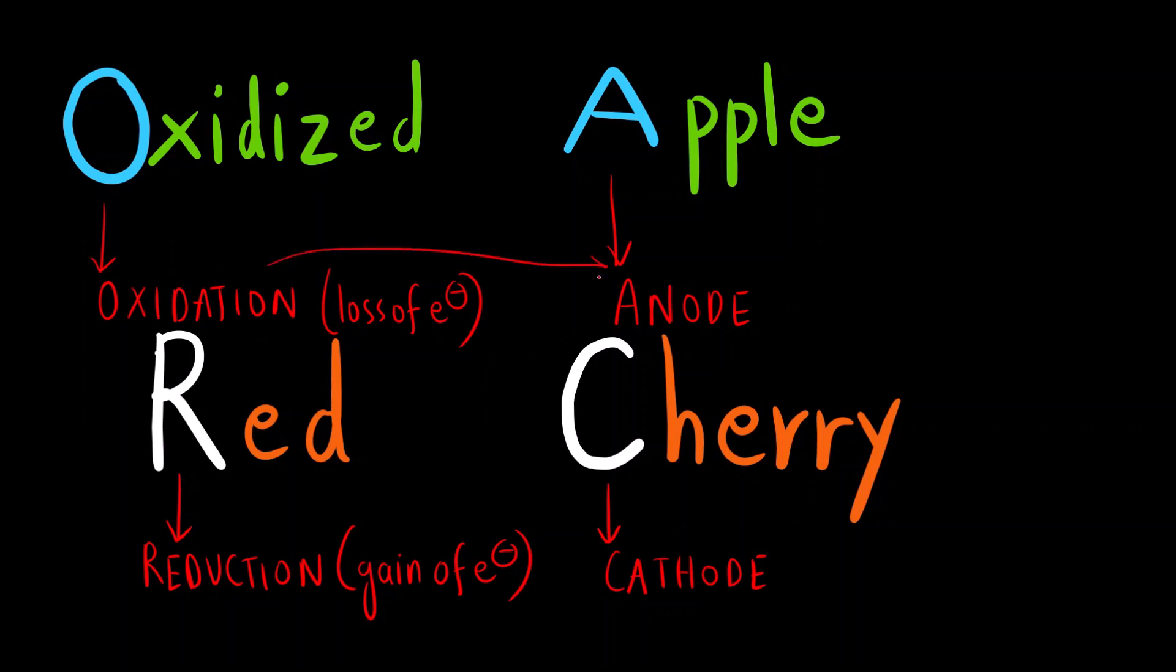So always oxidation takes place at the anode and reduction takes place at the cathode. For both the cell whether it is an electrolytic cell where electricity is used to generate or undergoes spontaneous reaction, or it is a galvanic cell or electrochemical cell where electricity is generated.